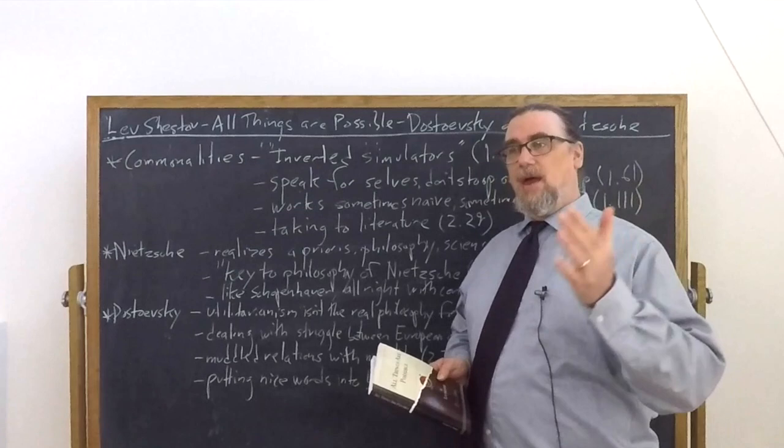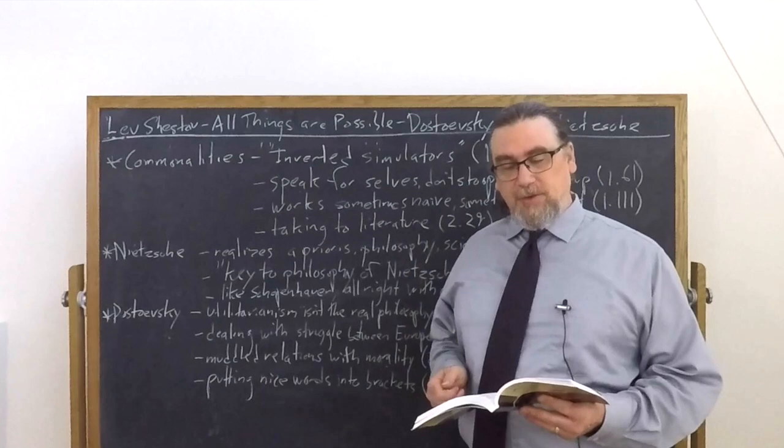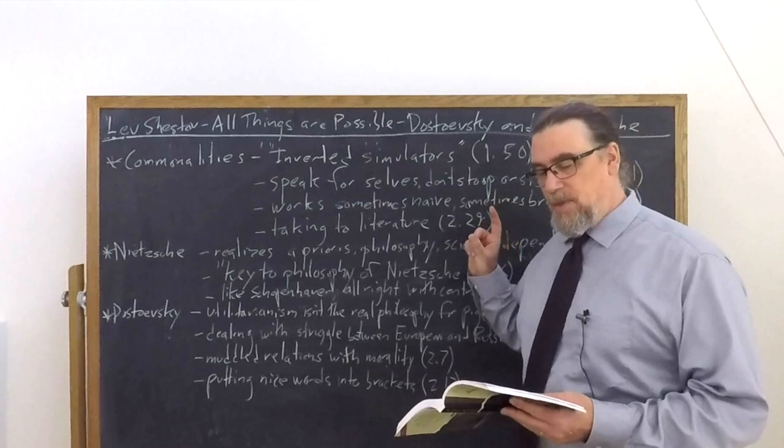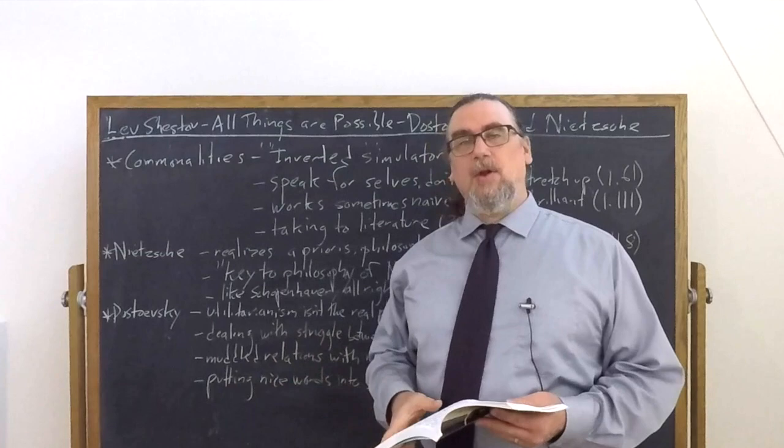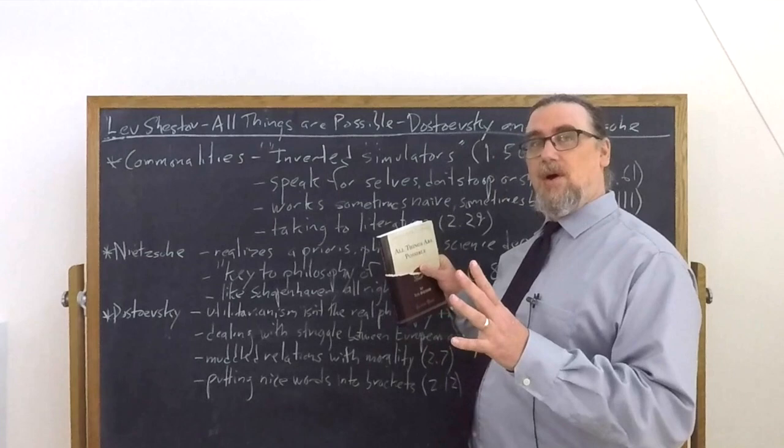So this is why Dostoevsky and Nietzsche were not afraid to speak in their own name. And here's the interesting addition to that. They did not feel compelled to stretch up or to stoop down in order to be on a level with other human beings. They could just be where they were and speak to anybody at any level. So that's another interesting feature.